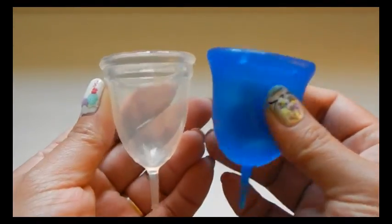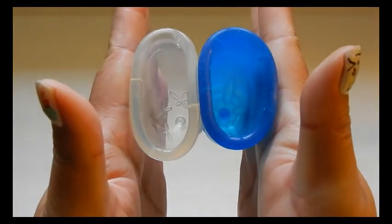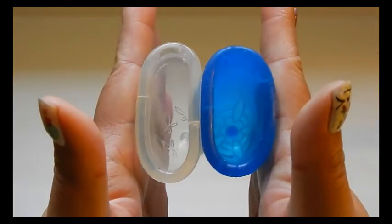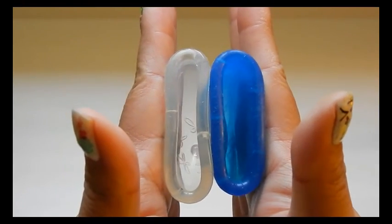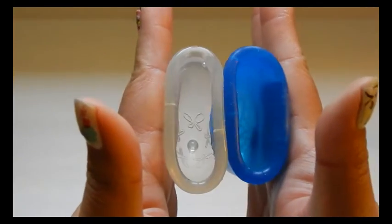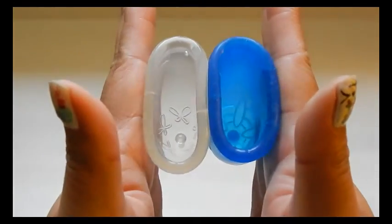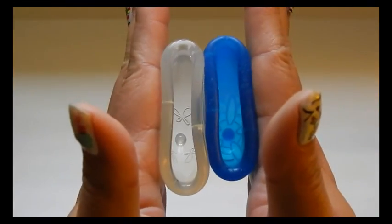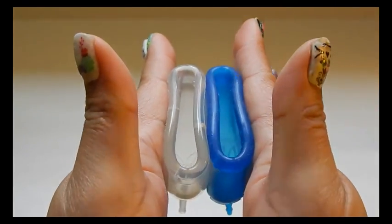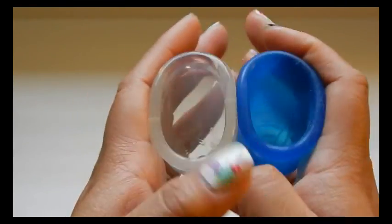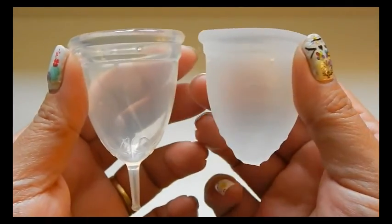The Juju and this Scoons cup, here are the back of the cups. Inside the Scoons and inside the Juju, and the rims. The Juju and the Ruby cup.